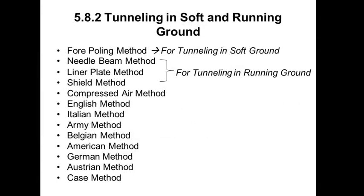Tunneling in soft and running ground. Various methods are used: the forepoling method, needle beam method, liner plate method, shield method (TBM method), compressed air method, English method, Italian method, Army method, Belgian method, American method, German method, and Austrian method.